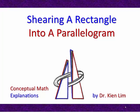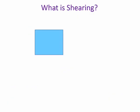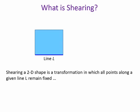In this video, I will explain what shearing a 2D object means, using a rectangle as an example to illustrate. Shearing is a type of transformation where points on the 2D object are moved. We first need to identify a line from which all other points are sheared. Let's call our line, line L. Shearing a 2D object is a transformation in which all points along a given line L remain fixed.